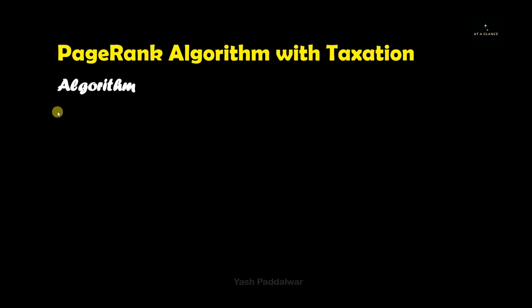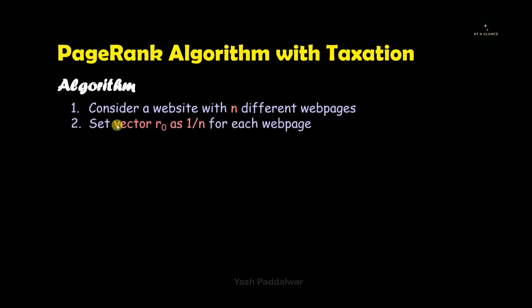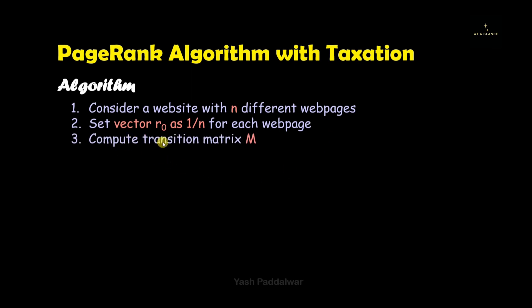Now let's look at the steps involved in this algorithm. Consider a website with n different web pages. The first thing we need to do is set the vector r0, which contains the page ranks of every single node in the network. At the initial stage we don't know the page rank of every web page, so we assign a common page rank of 1/n to each one, where n is the total number of nodes. For example, if the network has 3 nodes, r0 will contain 1/3 as the page rank for every web page.